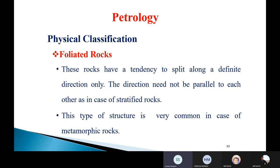The last type under physical classification is foliated rocks. These rocks have a tendency to split along a definite direction, but the direction need not be parallel to each other as in the case of stratified rocks. Foliated rocks have a platy or steel-like structure, formed under pressure. They also have a cleavage property and tend to split along a definite direction.